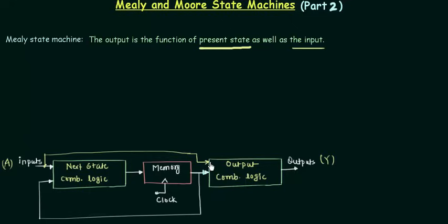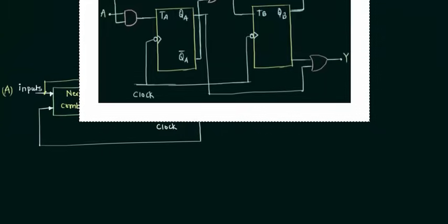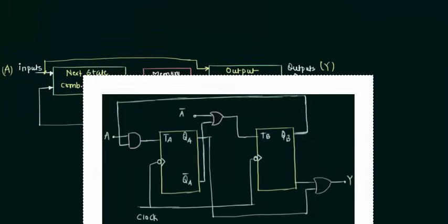Now we will see one example related to the Mealy state machine. I will take the same example as the last one and I will do a small change to convert it to the Mealy. We will drag it to the bottom of the board so that we can analyze it peacefully.